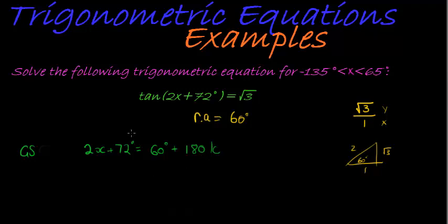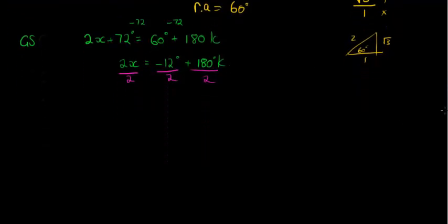So next up would be to subtract 72 on both sides, so what we're trying to do now is solve for x. So we get 2x is equal to 72, that gives me negative 12 degrees plus 180 degrees times k. Next up we are dividing with 2 to get x on its own. Everything gets divided with 2 so that I now have x is equal to negative 6 plus 90 degrees times k, and this k is an element of integers.